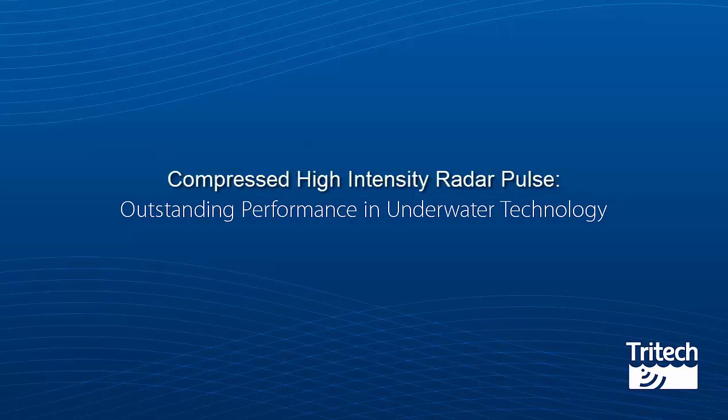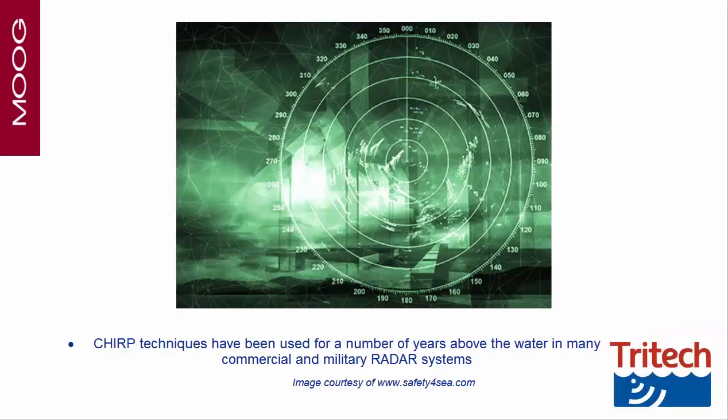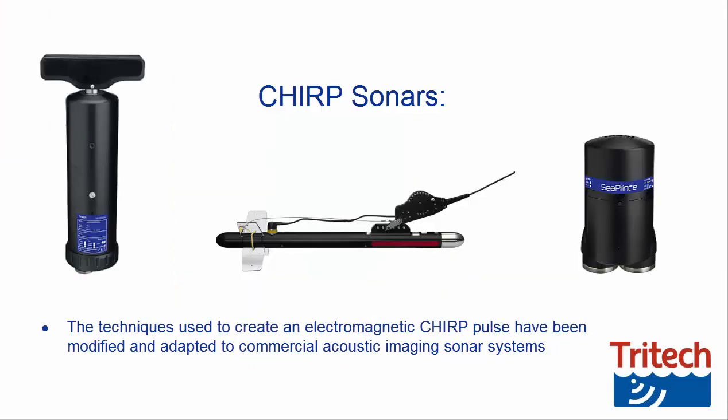CHIRP is an acronym for Compressed High Intensity Radar Pulse. CHIRP techniques have been used for a number of years above the water in many commercial and military radar systems. The techniques used to create an electromagnetic CHIRP pulse have been modified and adapted to commercial acoustic imaging sonar systems.